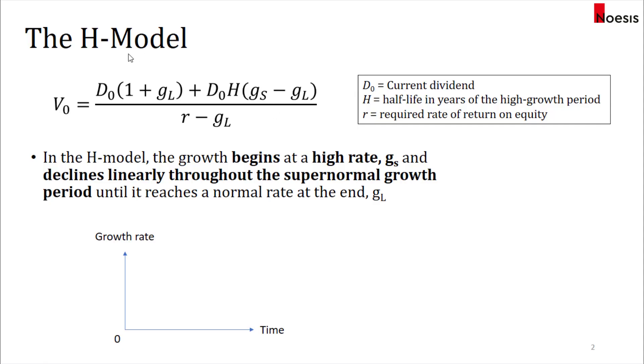The H model makes the assumption that the dividend growth rate begins at a high rate and declines linearly throughout the supernormal growth period until it reaches a normal stable rate at the end.